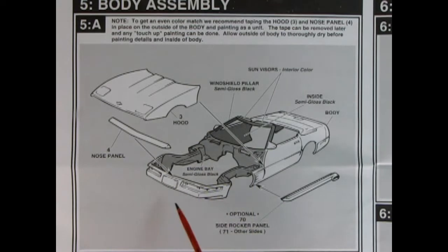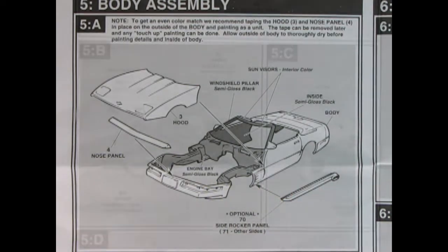Okay, so we've got our body here and then we put our hood on and our nose panel. Tape it all in place, paint everything, pull off your hood and nose panel and paint all this semi-gloss black in here. You have the option also of putting on these side rocker panels.